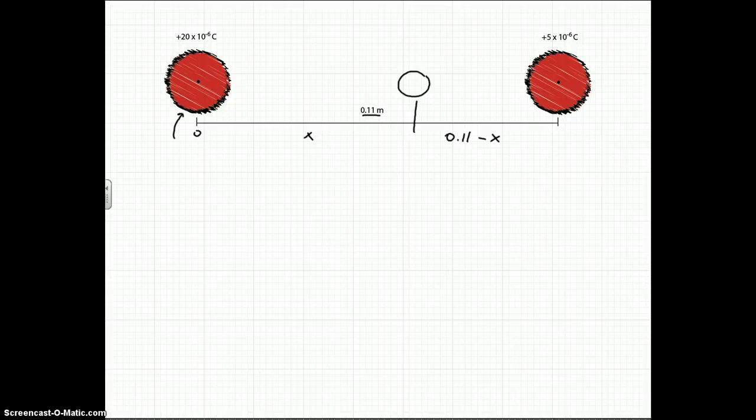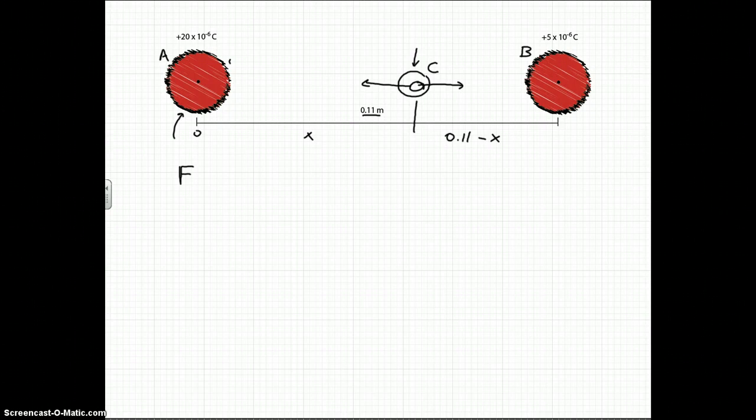So next let's take a look at what it means to be in equilibrium. This charge here needs to feel a force due to the one on the left, and it's going to be pushed away in that direction. Well, this one on the right is also going to push it away, but in the left direction. So what we want here is these two forces, we want them to be equal and opposite in size. So if we call this one A, this one B, and this one C, you can say that the force of A on C has to equal the force of B on C.